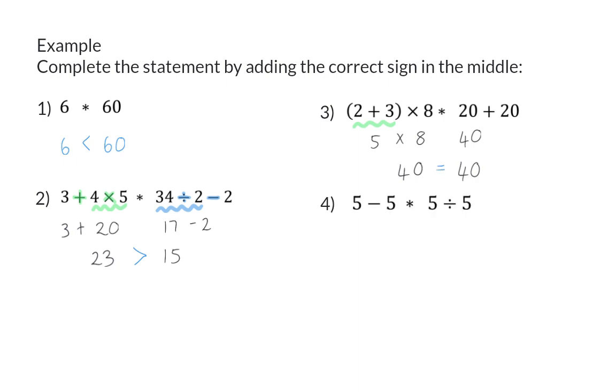In number four, on the left, we have 5 minus 5, which is 0. And on the right, we have 5 divided by 5, and anything divided by itself is 1. So here, the left-hand side is smaller than the right-hand side.